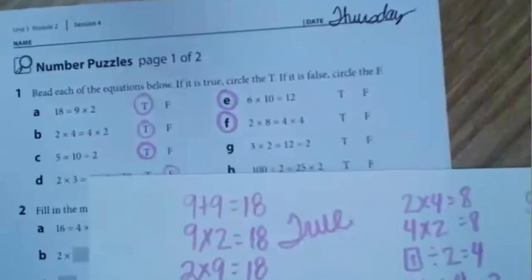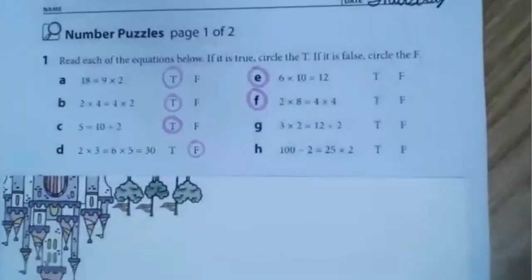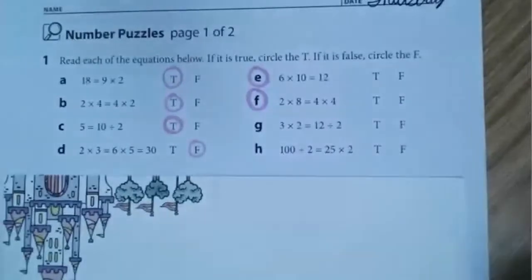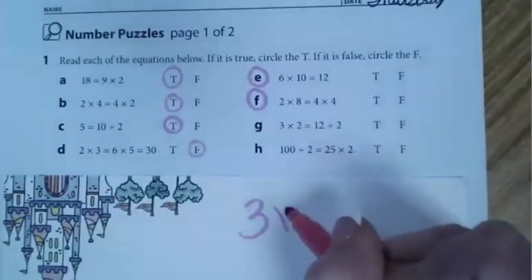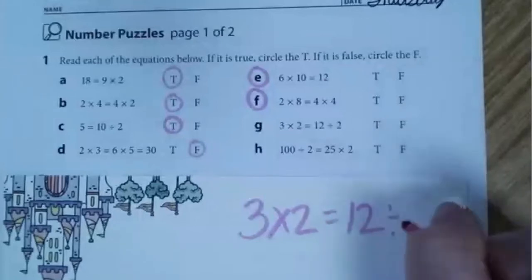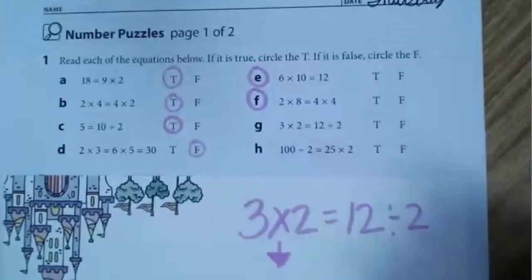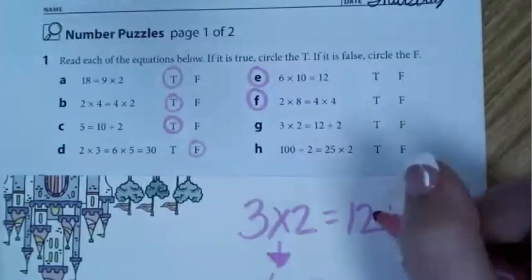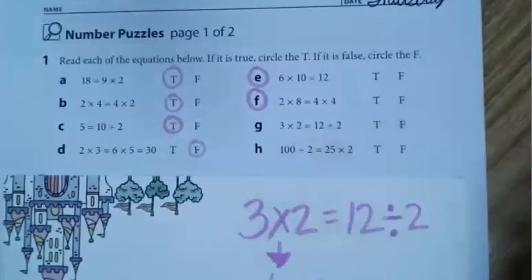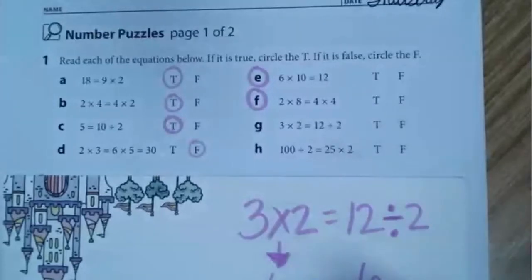Let's look at letter G together. We have three times two is the same as 12 divided by two. I know that three plus three is equal to six, and 12 divided into two equal groups — think about your doubles — is the same as six. So yes, this one is true.